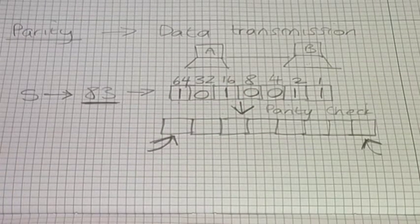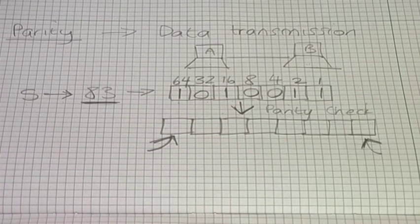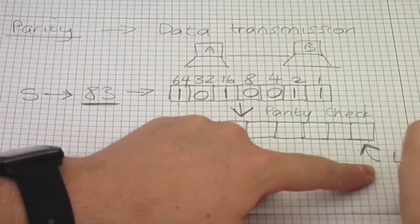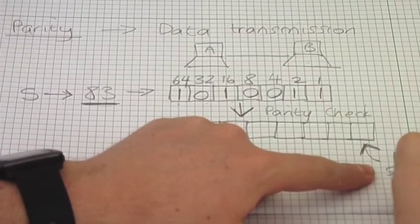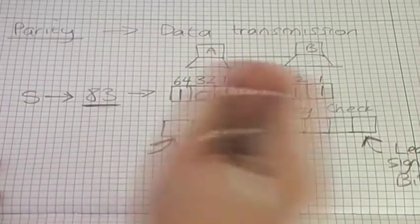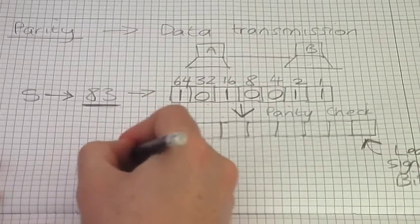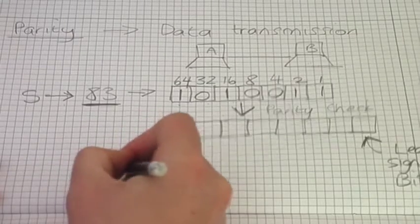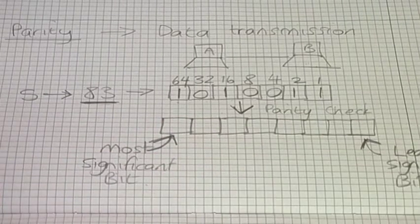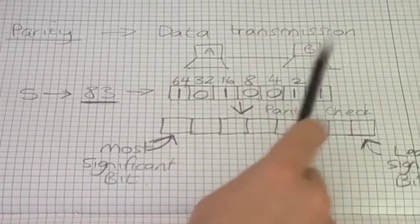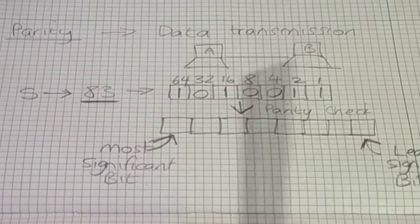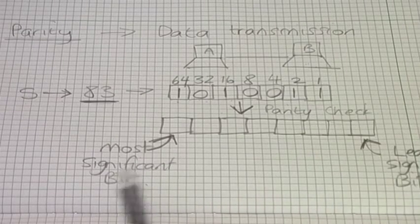In computer science we like to give things a fancy name, so we don't say back or front. We say the one at the back is called the least significant bit, and the one at the front is the most significant bit. The computers during the handshaking phase will agree on whether the parity bit is positioned at the most significant bit or the least significant bit. I'm going to use the most significant bit.